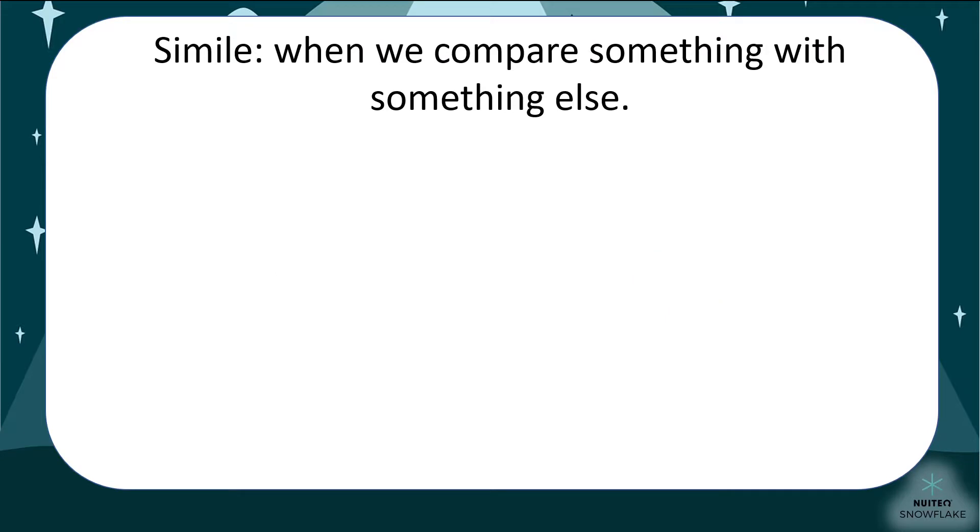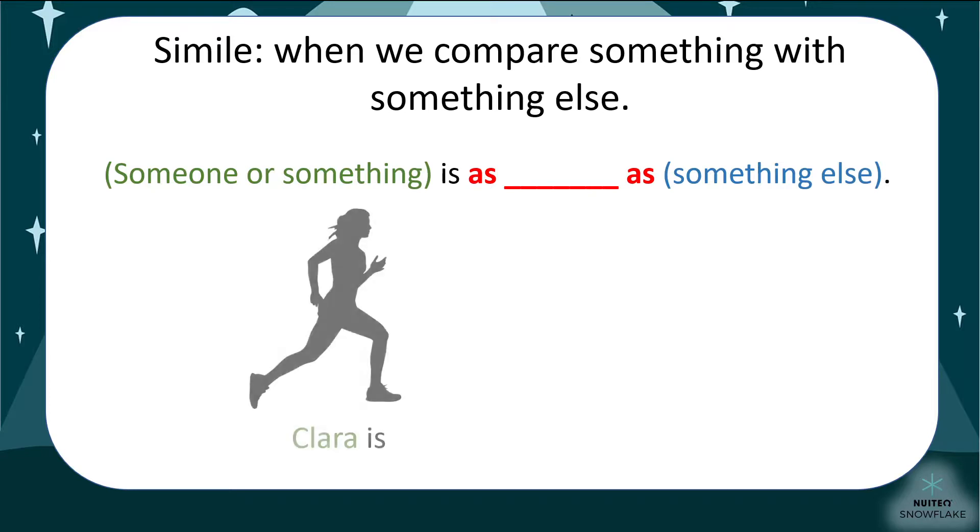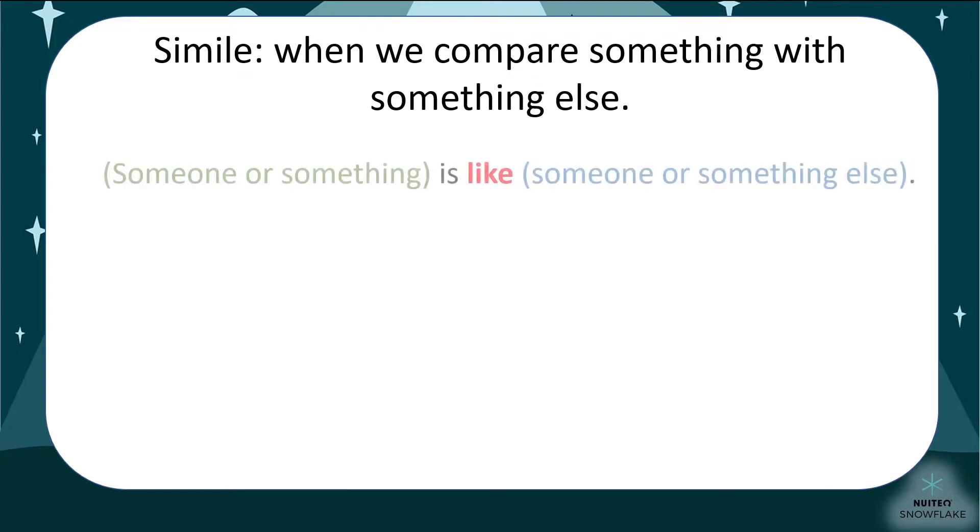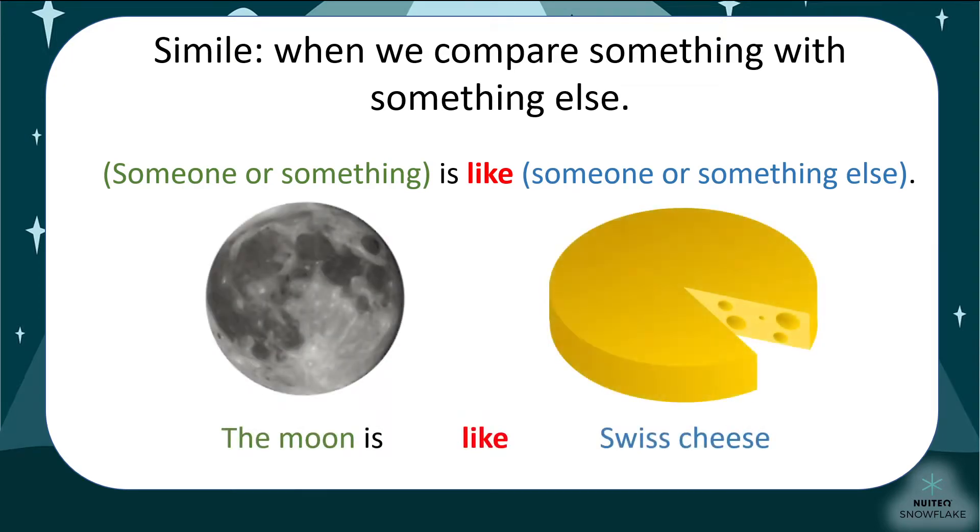A simile often looks like this. Someone or something is as, as something else. For example, Clara is as fast as a leopard. Or like this. Someone or something is like someone or something else. For example, the moon is like Swiss cheese, round and full of holes.